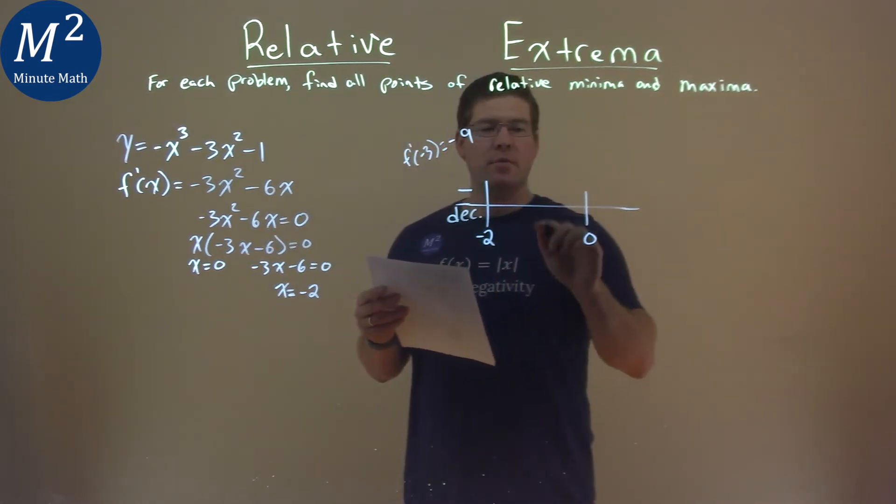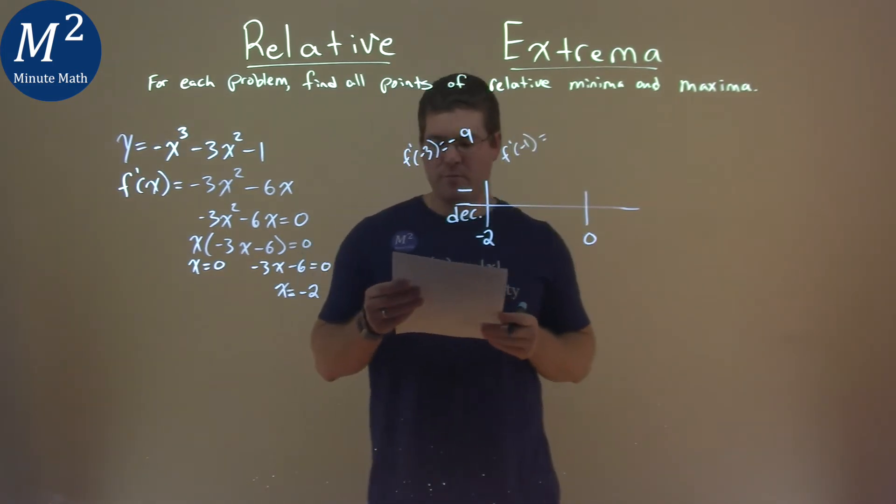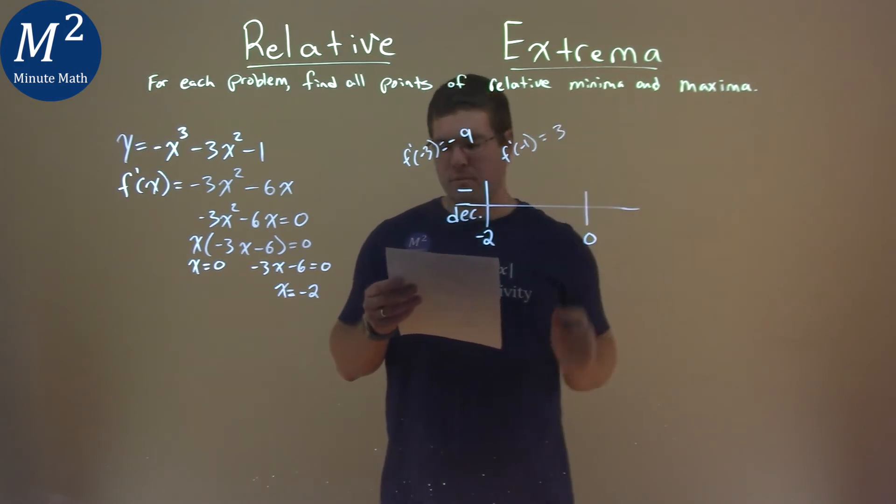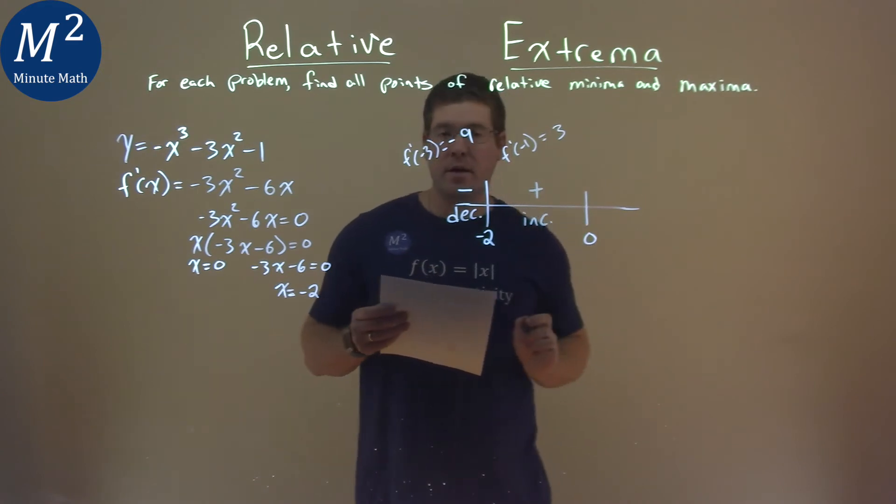Now between negative 2 and 0, I pick negative 1, so f prime of negative 1. I plug that into my derivative right there, and I got positive 3. It's positive, that's what I care about, and we're increasing on that interval.